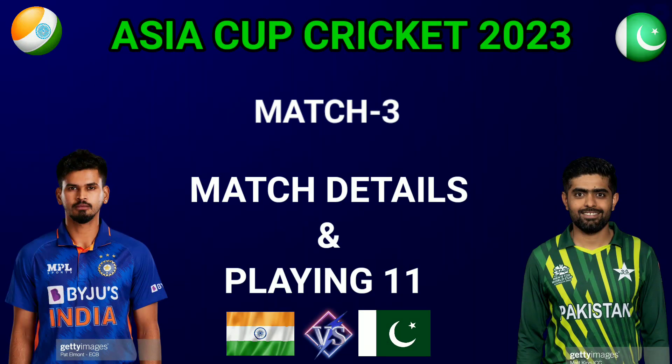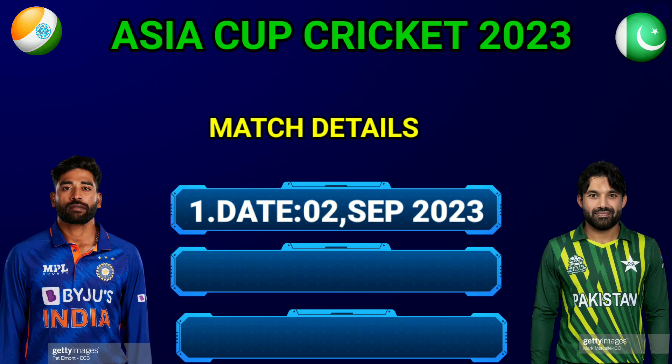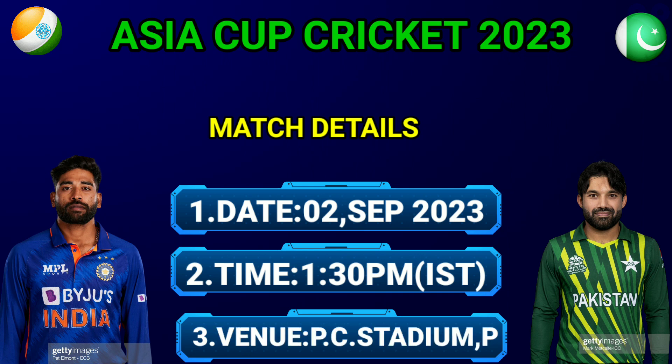Asia Cup Cricket 2023, 3rd match: India vs Pakistan match details and both teams' final playing 11. Match details: date 2nd September 2023, time 1:30 PM Indian Standard Time, venue Pallekele Cricket Stadium, Pallekele.